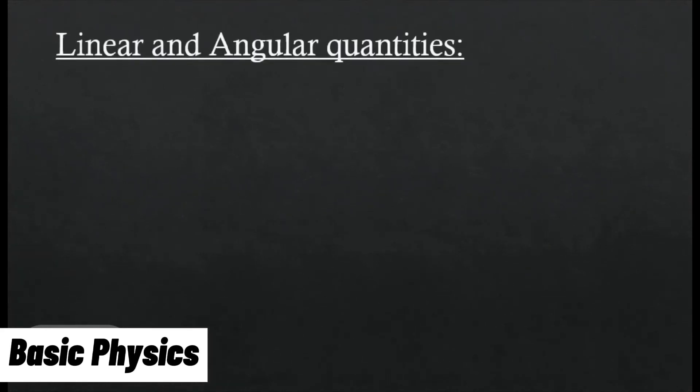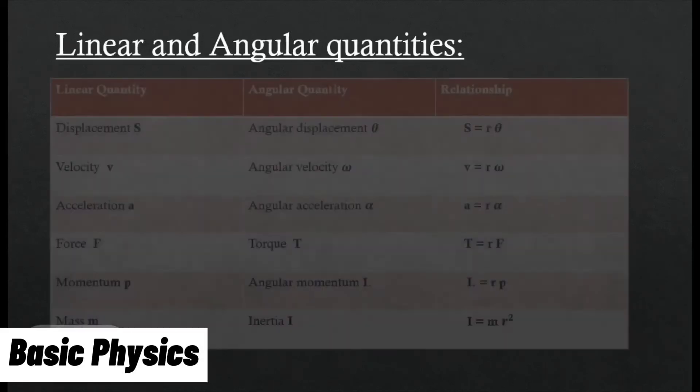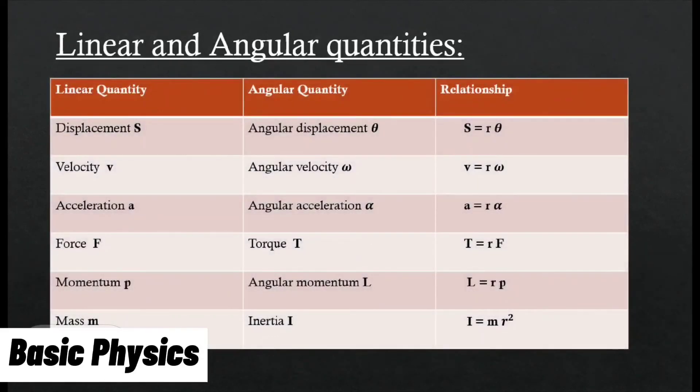Relation between linear and angular quantities: s = rθ, where s is linear displacement and θ is angular displacement. v = rω, where v is linear velocity and ω is angular velocity. a = rα, where a is linear acceleration and α is the angular acceleration.